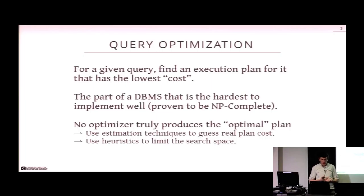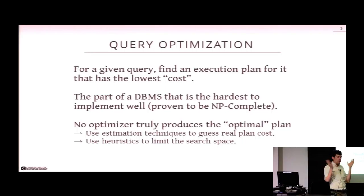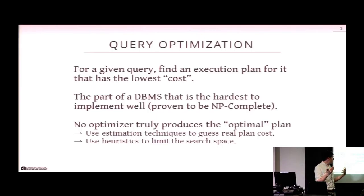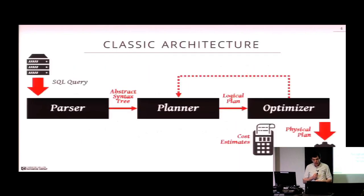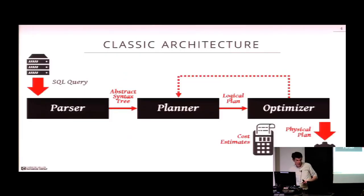We're also going to use heuristics to limit the search space. Rather than looking exhaustively at all possible combinations, we'll use heuristics to prune things very easily. The easiest one is that you almost never want to execute a Cartesian product join, so you just ignore all of that. The architecture you would learn in an intro database class looks something like this, and for the most part this is what we're going to follow.